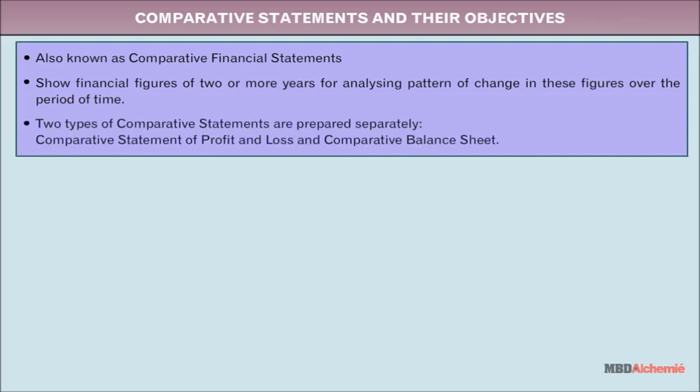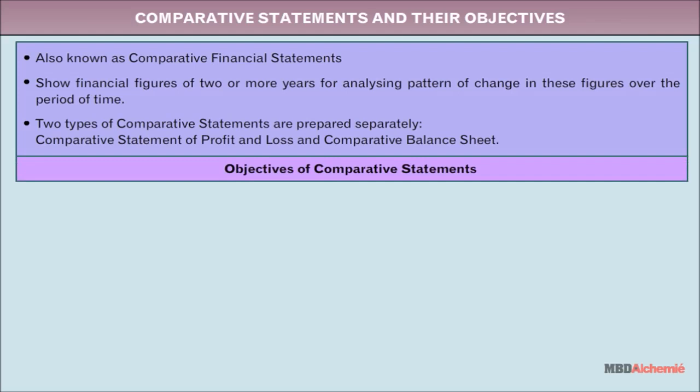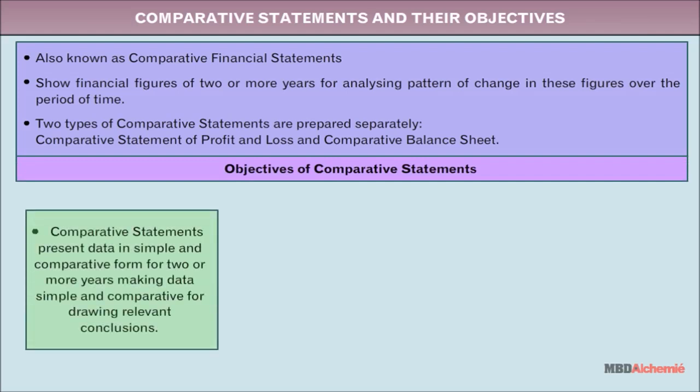Two types of comparative statements are prepared separately: comparative statement of profit and loss, and comparative balance sheet. Comparative statements present data in simple and comparative form for two or more years, making data simple and comparative for drawing relevant conclusions.